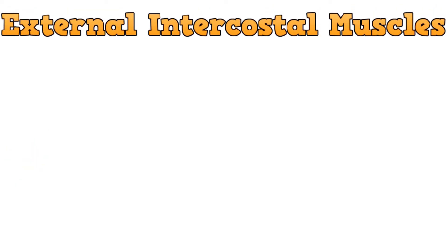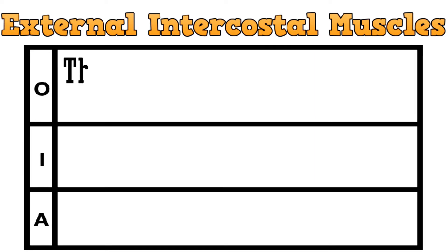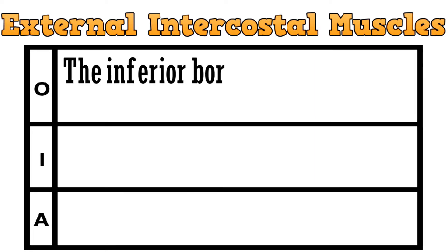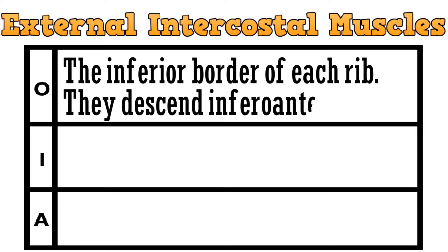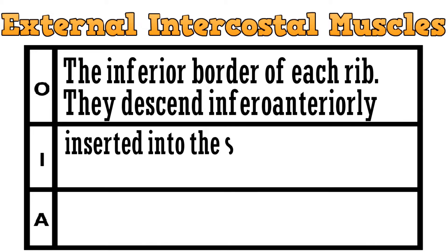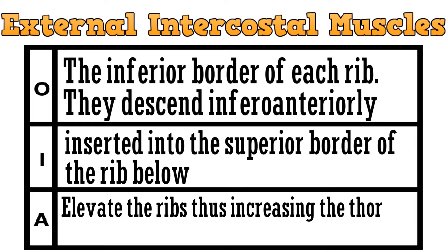First, the autochthonous muscles are the external intercostal muscles. These muscles originate from the inferior border of each rib. They descend infero-anteriorly and get inserted into the superior border of the rib below. They elevate the ribs, thus increasing the thoracic volume.